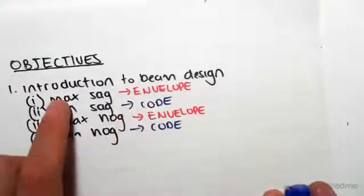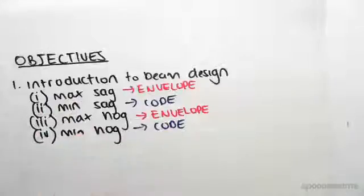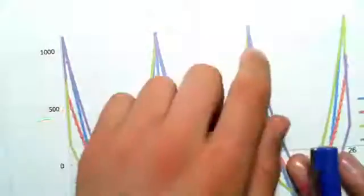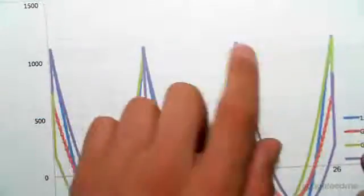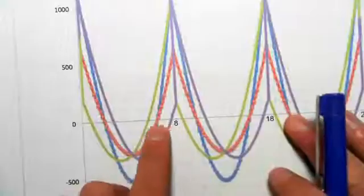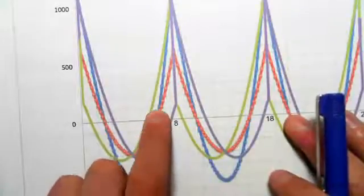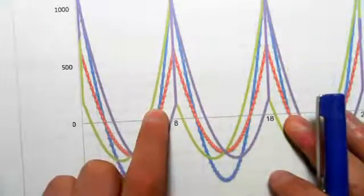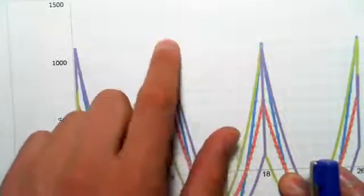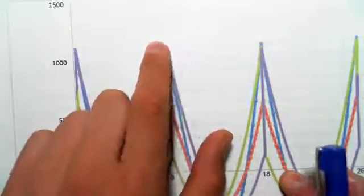The minimum sagging comes straight from the code. It's the exact same for the hogging case. At the supports, we have quite large bending moments, so we need to design for these moments straight off the envelope. As we move away from the support, we still have hogging moments but they're much smaller, so we need less steel to handle the moment.